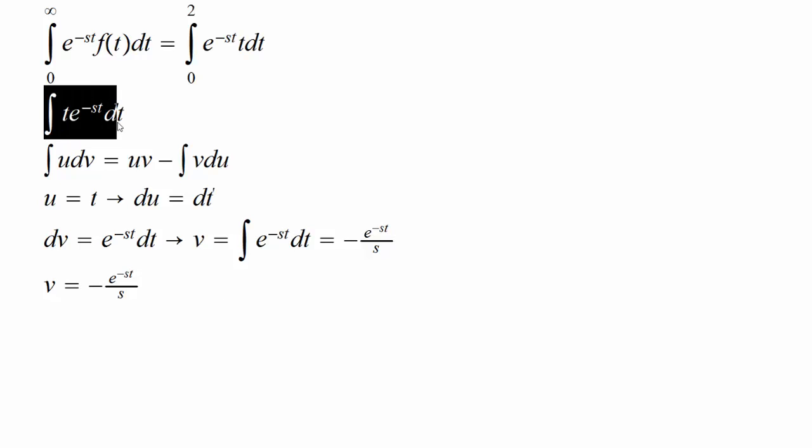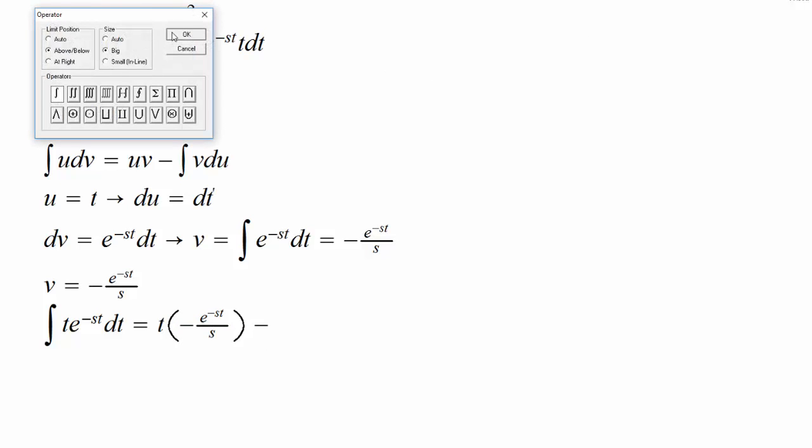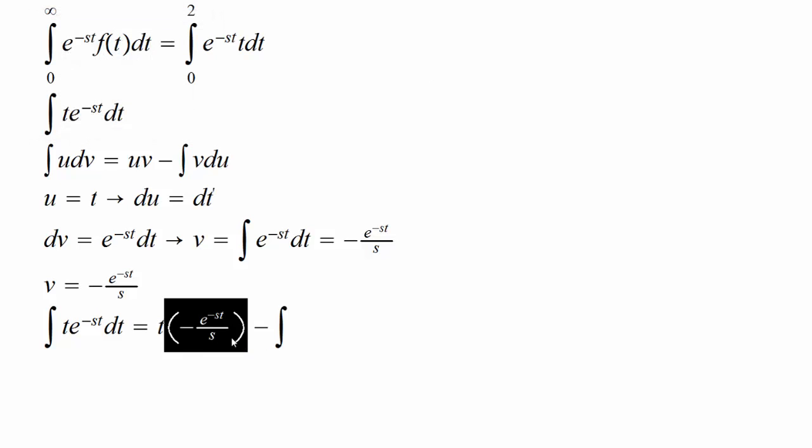So let's write this down according to the integration by parts. So we have uv, so we got our u, who is my v, v is this guy. Minus, we will have what? We will have v du, so this is my v, and my du is dt.